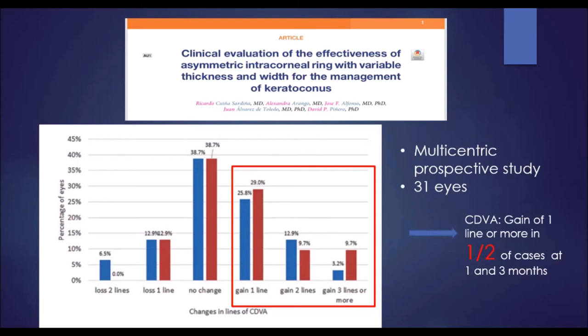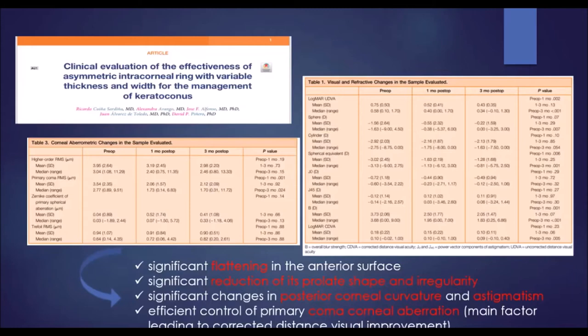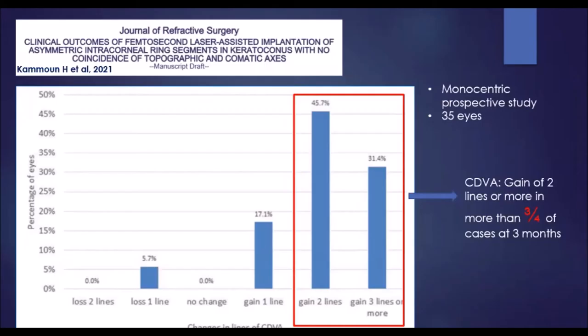Here are the results of a paper published in December 2020. The study included 31 eyes treated with IGL Pro segments. A gain of one line or more was achieved in about half of cases at three months. There was also a significant corneal flattening on both the anterior and posterior surface, and most importantly, control of coma aberration, which is directly related to vision improvement.